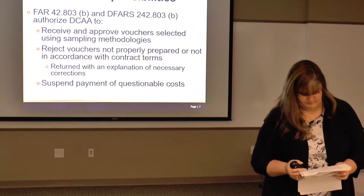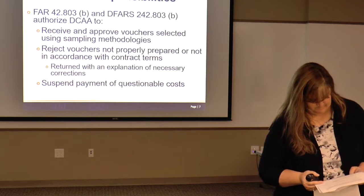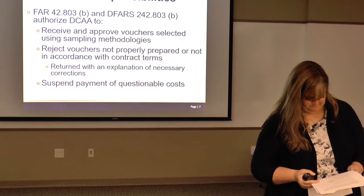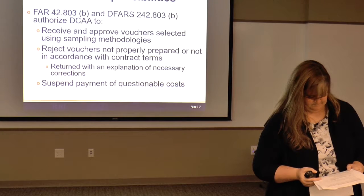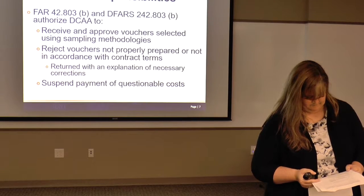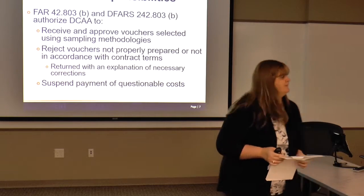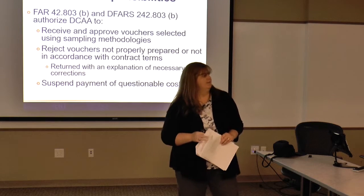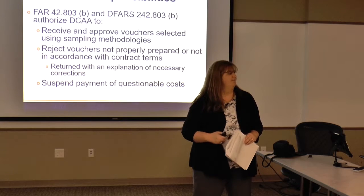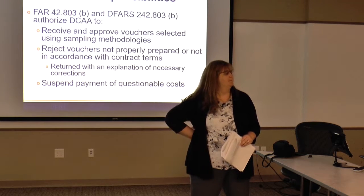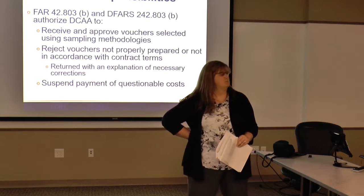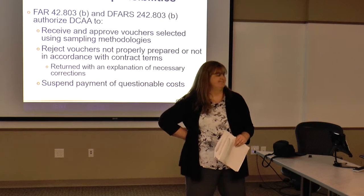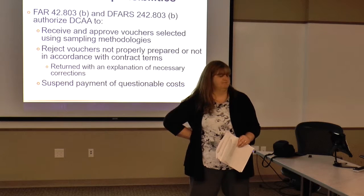Are the costs and fee billed in accordance with the contract provisions? There's a 15% withhold requirement on fee. Some contracts say you can bill up to 85% and withhold the rest; others say you must withhold 15% throughout the process. That requirement is in the FAR. If it's not spelled out in the contract, the decision is left to the ACO, and we work that out with them to make sure the contractor knows what's expected.